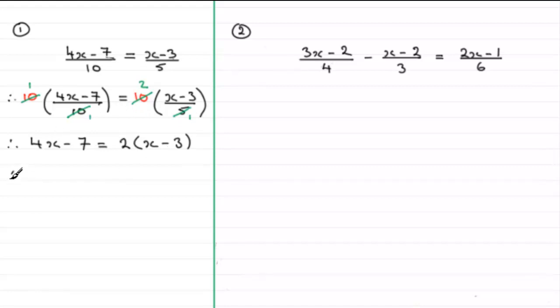So we just proceed in the usual way at this stage. We will have 4x minus 7 on the left and on the right we expand the bracket and get 2x minus 6. If we subtract 2x from both sides we'll have 2x minus 7 equals minus 6. And then I'm going to add 7 to both sides so we have 2x equals minus 6 add 7 which is 1. And if we divide both sides now by 2 we end up with x equals 1 over 2 which is a half.